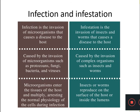During infection, the microorganisms enter the tissues of the host and multiply there, thereby arresting the normal physiology of the cells. During infestation, the insects or worms reproduce on the surface of the host or inside the lumens of various tracts inside the body — the digestive tract, respiratory tract, or reproductive tract.